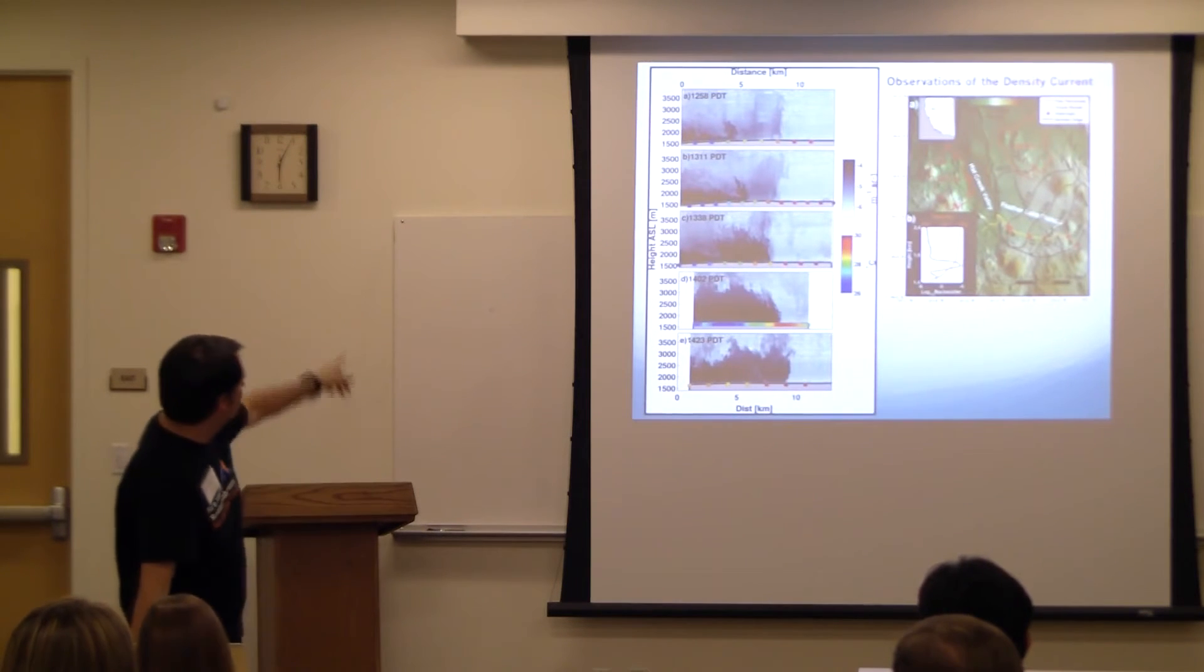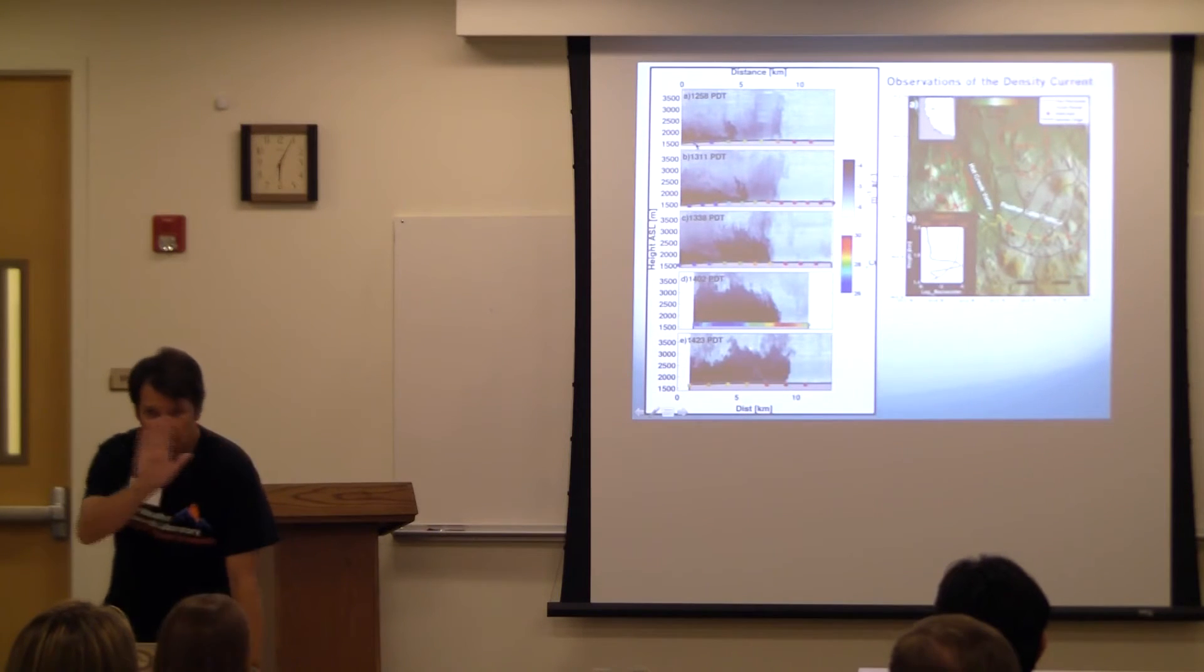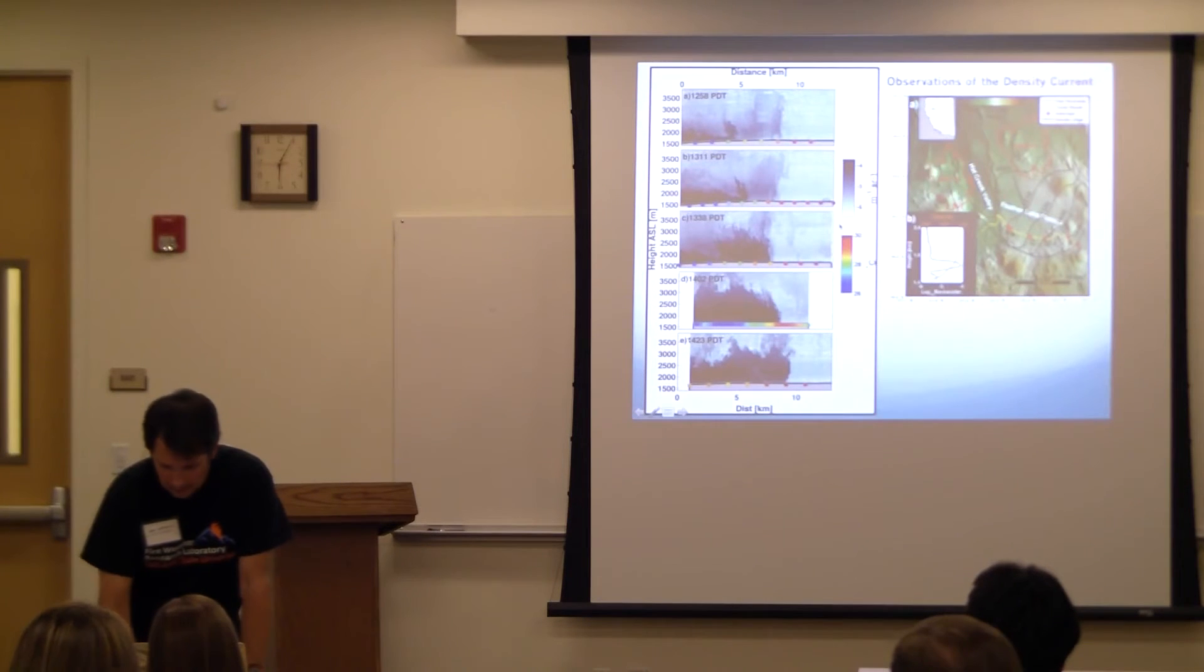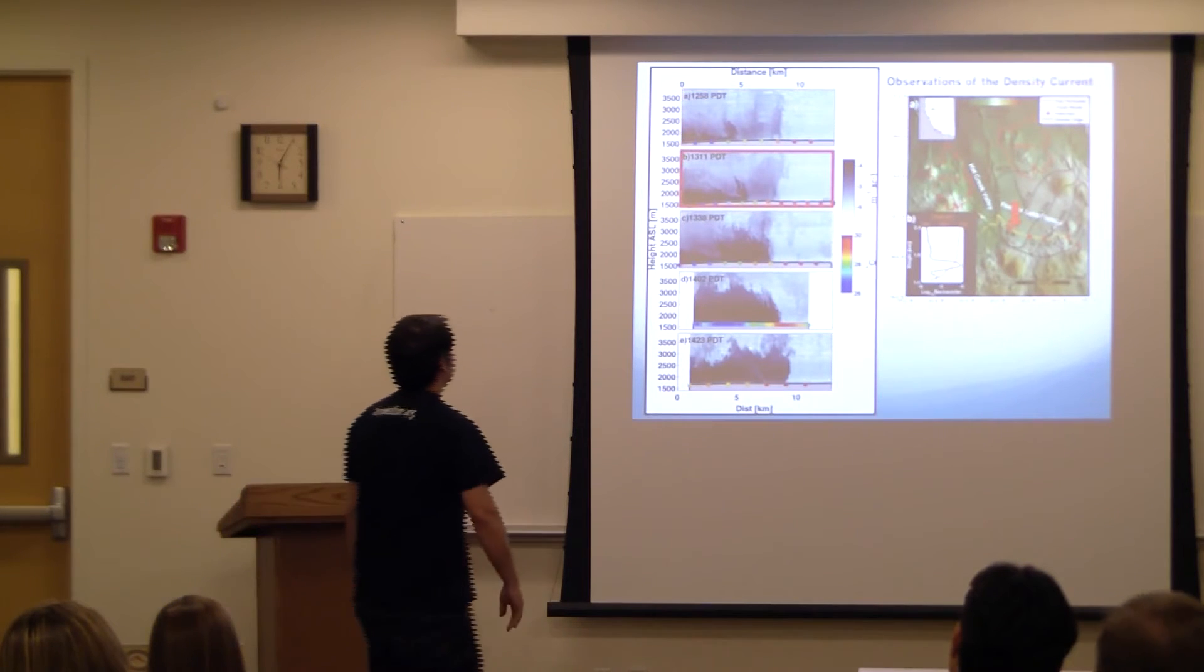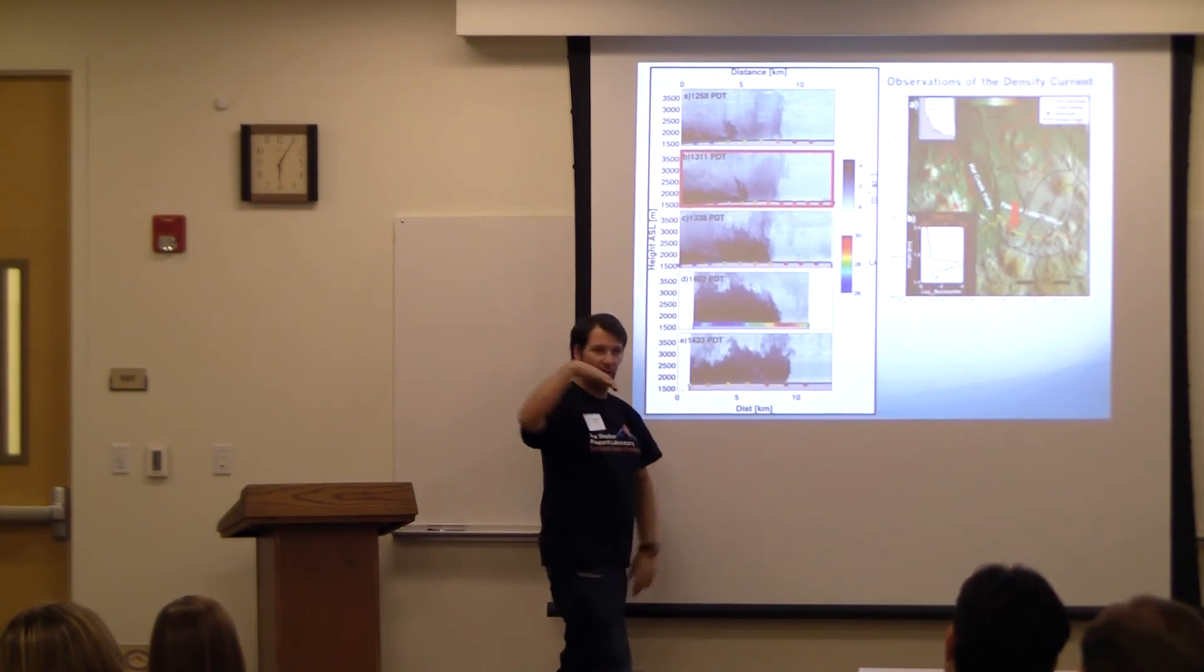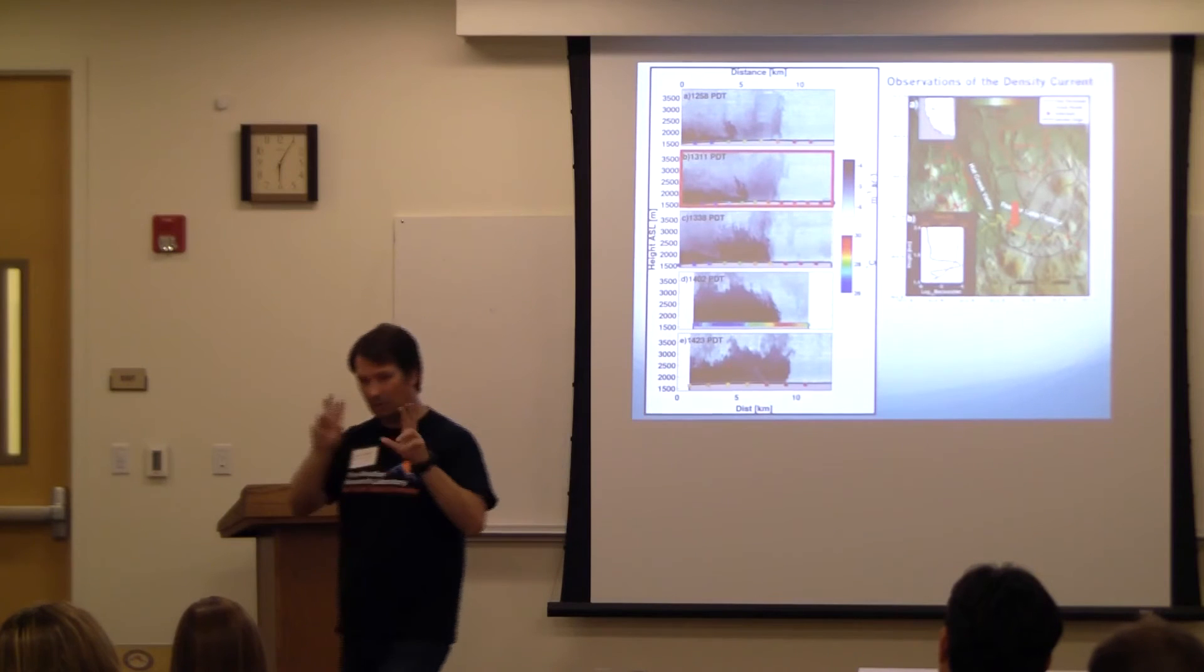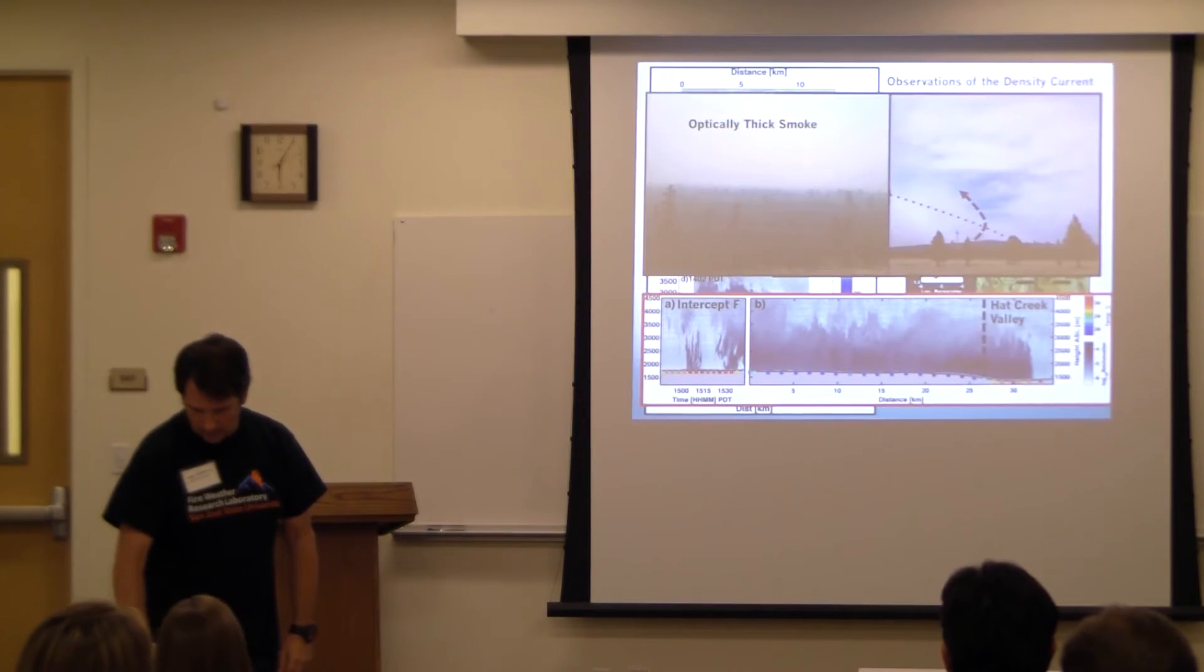So what happens is the smoke shades the air, the surface of the air, just like a cloud would. So the surface gets colder, and so that air is colder. And since it's colder, it's more dense, it wants to move towards the low pressure, which is the surrounding landscape that's hotter. And so it propagates. It actually moved 25 kilometers against the wind. So it has impacts on smoke transport, which is a big thing. And when the Forest Service calculates where smoke is going to go for public safety, their models do not account for this. So that's why it's kind of a big deal.